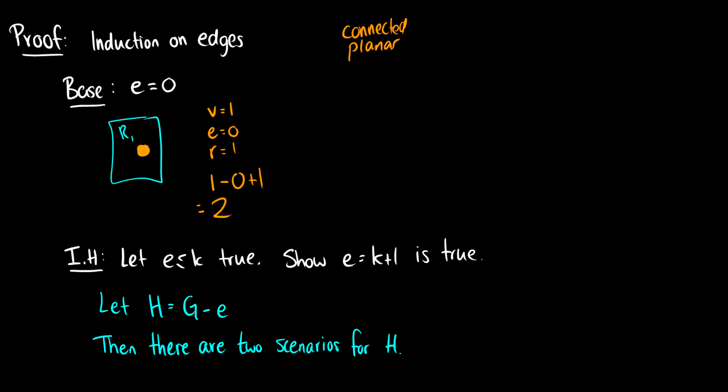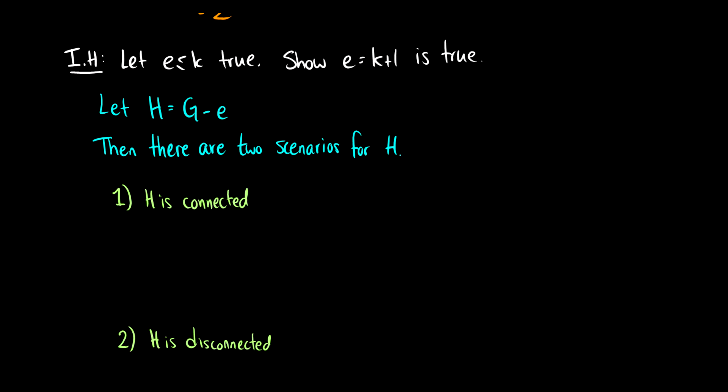For induction, we're going to let some graph with less than or equal to k edges be true — that is, a planar connected graph that follows V minus E plus R equals 2. We're going to show that when we add an edge, it's still going to be true. Instead, what we're going to do is take G and remove an edge. H is going to have edges less than or equal to k. We define H as G minus some random edge.